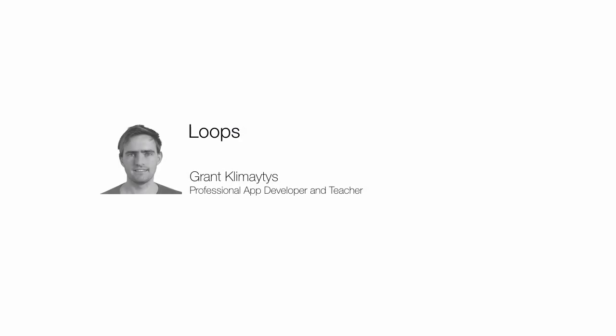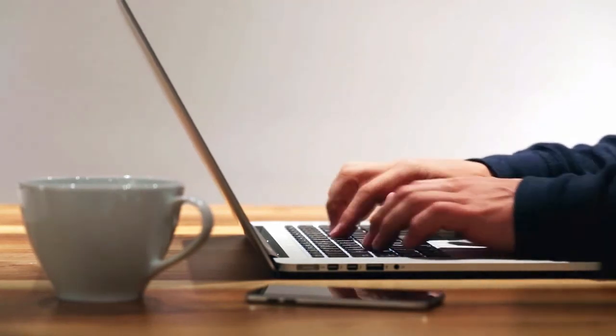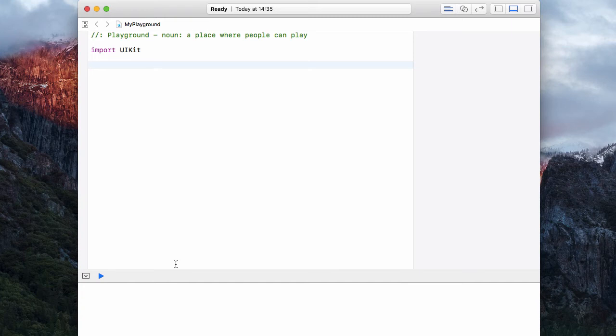Loops in Swift 3: occasionally in your programs you need to perform some kind of action multiple times over multiple pieces of data. Rather than calling some function again and again, loops allow you to do that in just a few lines of code. Let's see how these loops work and all the different kinds we have in Swift 3 by implementing them in our playground.